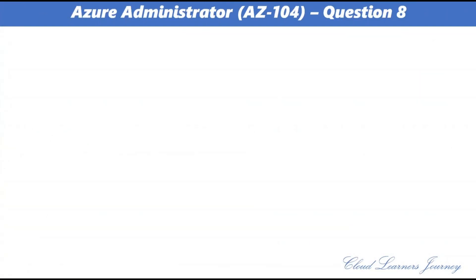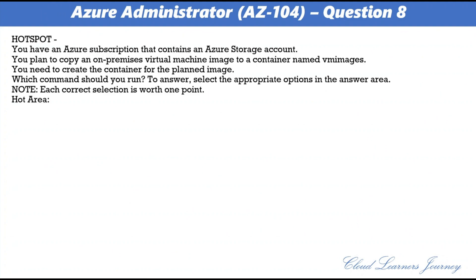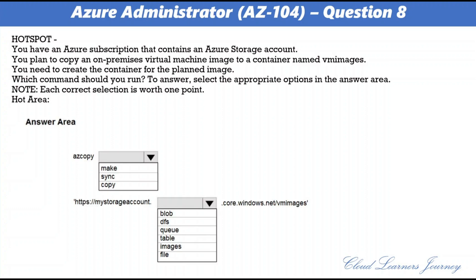Question 8. You have an Azure subscription that contains an Azure storage account. You plan to copy an on-premises virtual machine image to a container named vmimages. You need to create the container for the planned image. The answer is: make + blob. VM images are a collection of metadata and pointers to a set of VHDs — one VHD per disk — stored as page blobs in Azure storage.